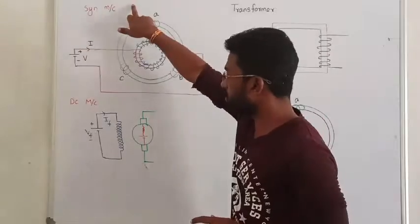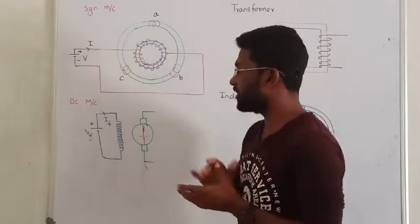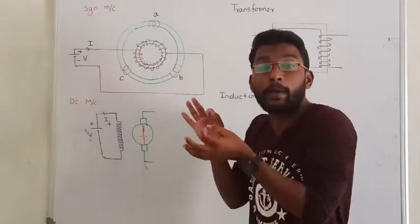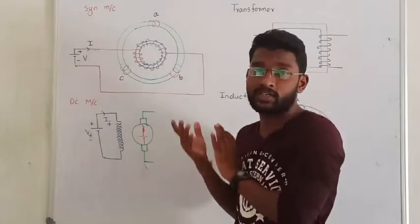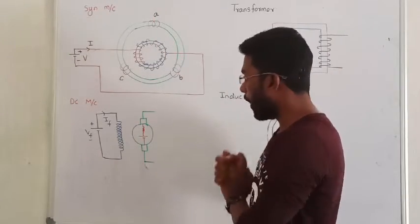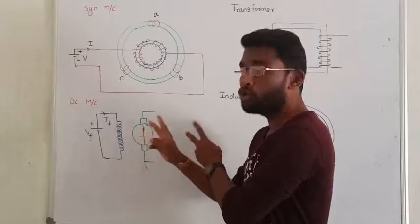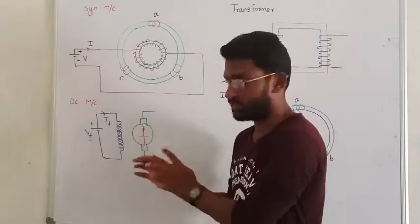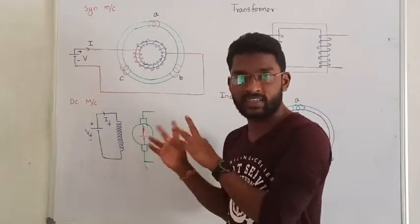So the conclusion is: synchronous machine and DC machine are called doubly excited machines. Why? Because there are two flux excitations.